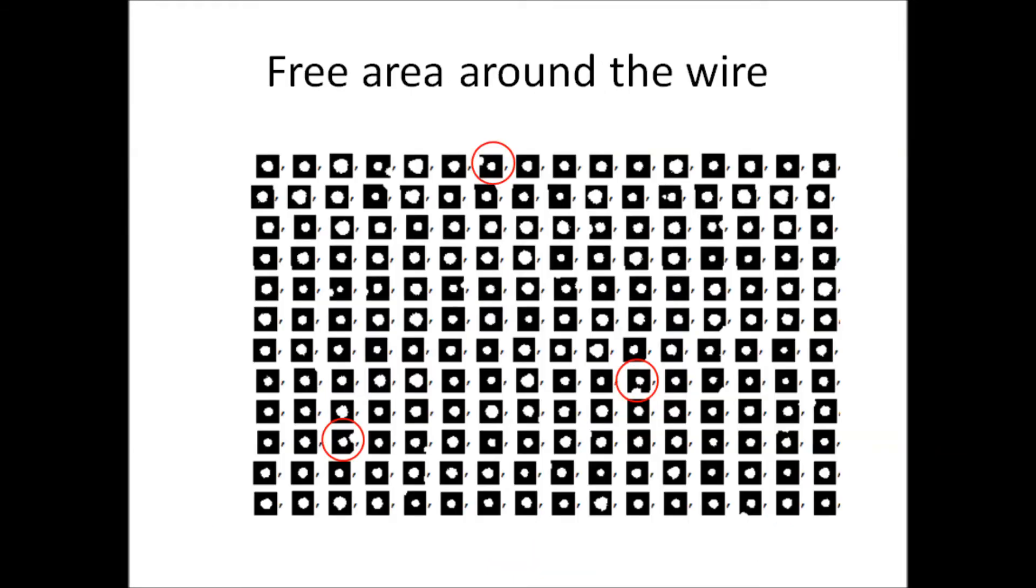Instead of looking at just the distance, let's look at the free area around the wire. Here's a small snapshot of about 200 wires and the substrate around them that they could use to grow. I circled a few of the wires that have others seriously impinging on their space.